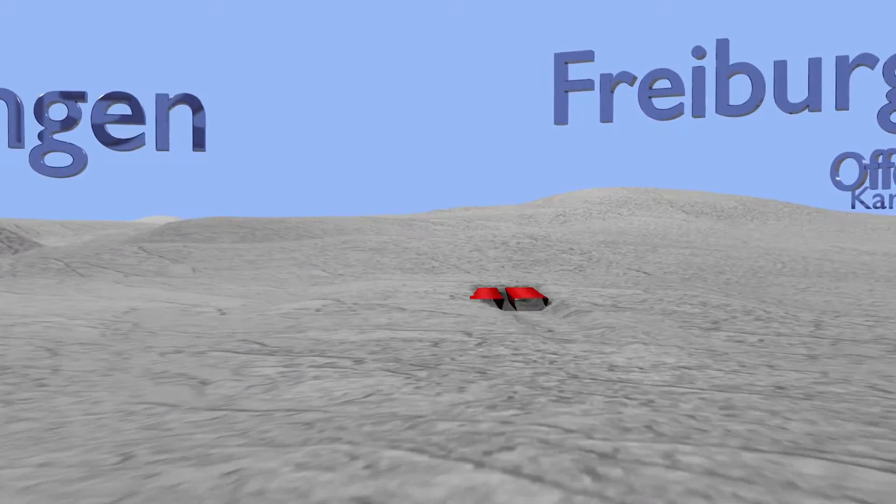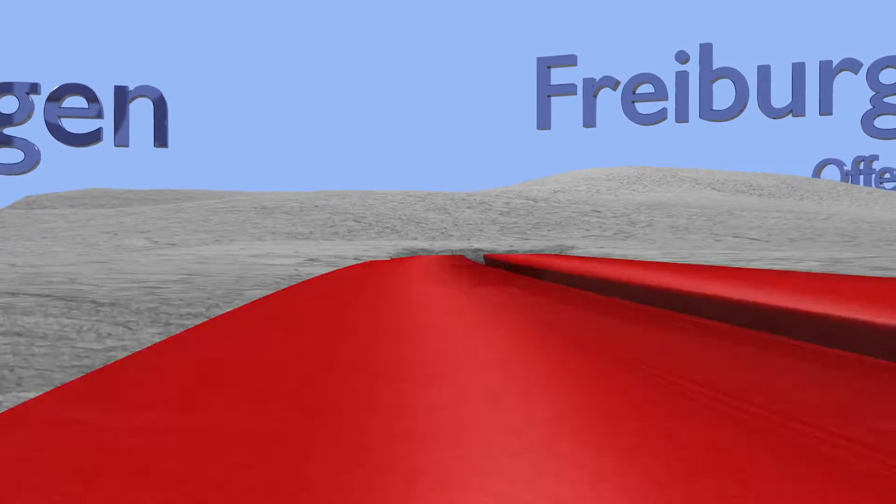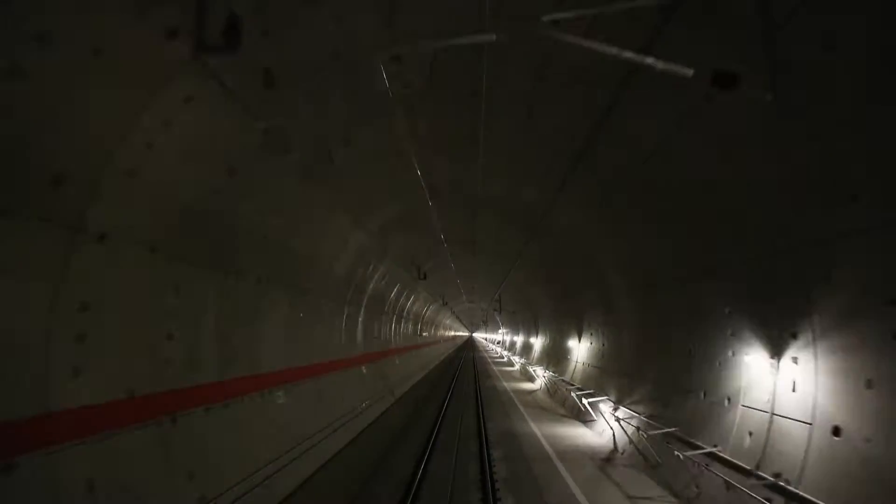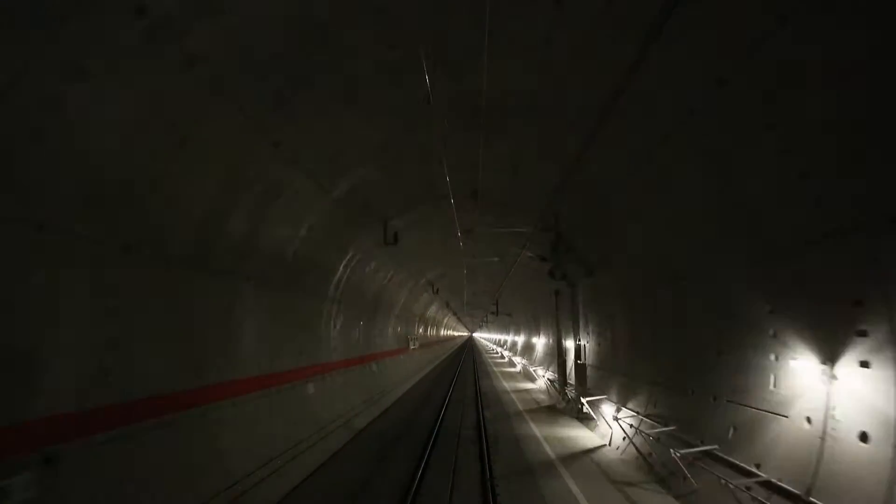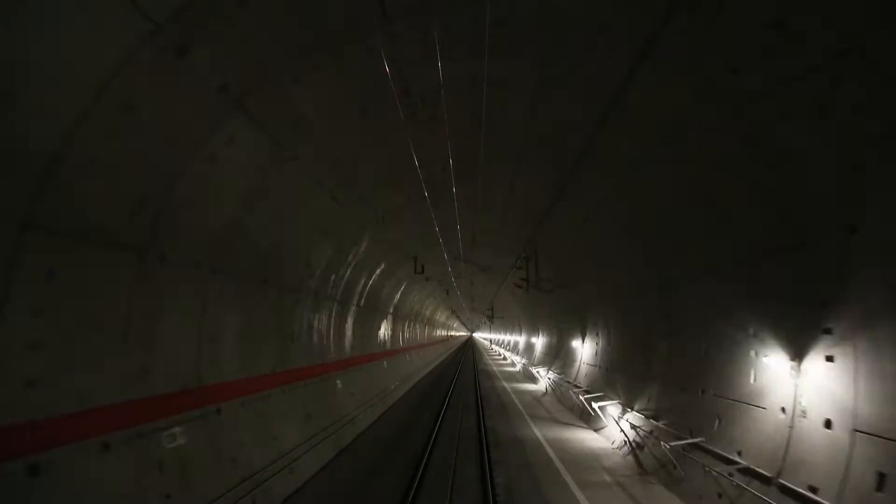In future, trains with speeds of up to 250 km per hour will be sent through the third longest rail tunnel in Germany. Installation of a high-speed overhead contact line has made this possible.